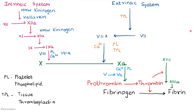The fibrin formed is stabilized by factor 13, which is activated by thrombin. So thrombin has two functions: converting fibrinogen to fibrin, and activating factor 13, which in turn stabilizes the fibrin.